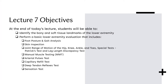The lecture seven objectives are that at the end of today's lecture, students will be able to identify the bony and soft tissue landmarks of the lower extremity, perform a basic lower extremity evaluation that includes foot posture and gait analysis, skin inspection, joint range of motion of the hip, knee, ankle, and toes, and special tests — PATRICS and leg length discrepancy test, manual muscle testing, arterial pulses test, capillary refills test, deep tendon reflex testing, and sensation testing.